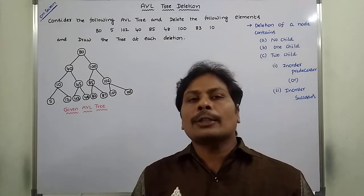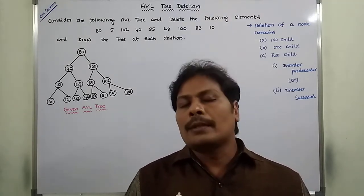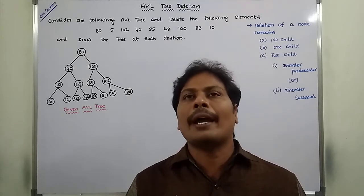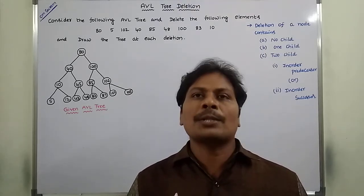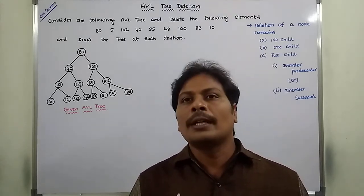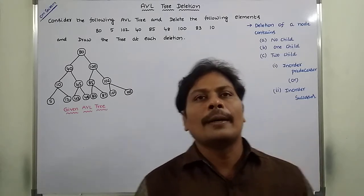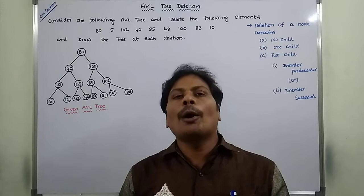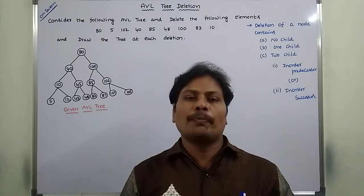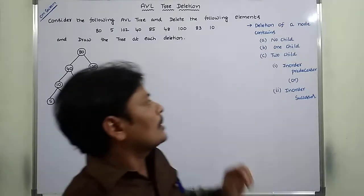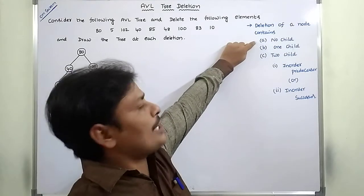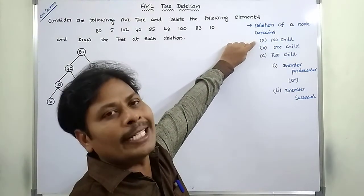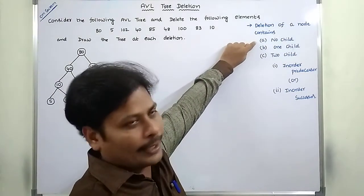Before going to the example problem, suppose we want to delete a node from the AVL tree. First, we have to observe whether that node has no children, one child, or two children. Suppose that node has no child, there is no problem — we simply have to delete that node.